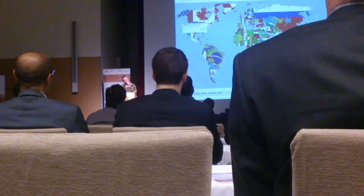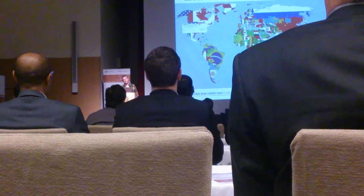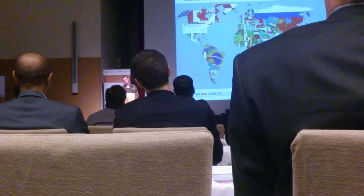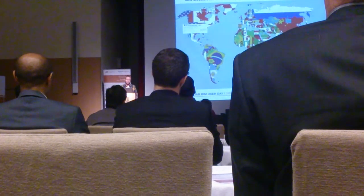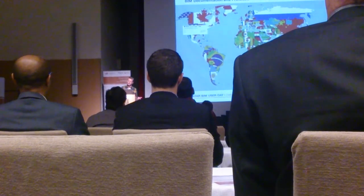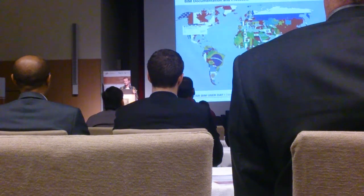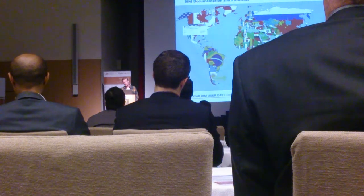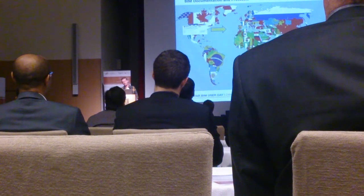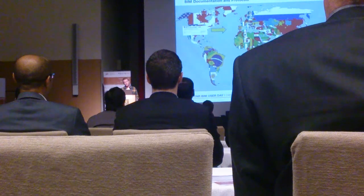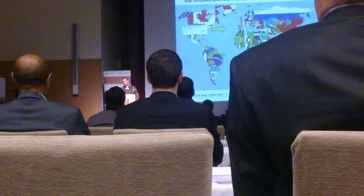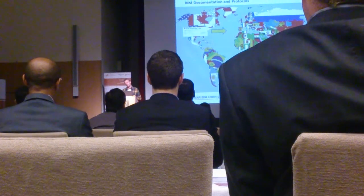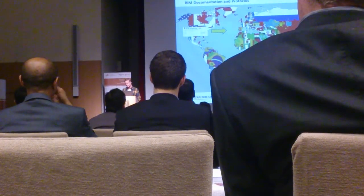I looked at the American Institute of Architects document in 2007 — it was a very simple document, about six pages. It talks about the model, LOD — level of development. That migrated across to Europe and people picked up on it. We also got COBie coming in, and the UK government has taken COBie — which is a spreadsheet — and managed to over-complicate it. Nobody has identified how much COBie will cost for the industry to implement, and I think that's really important.